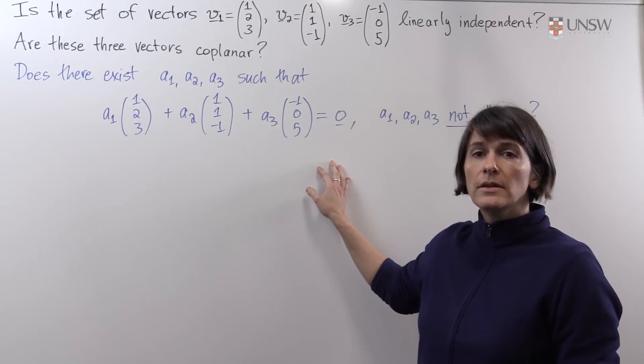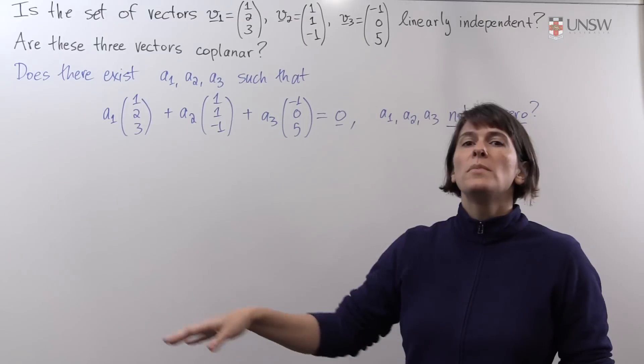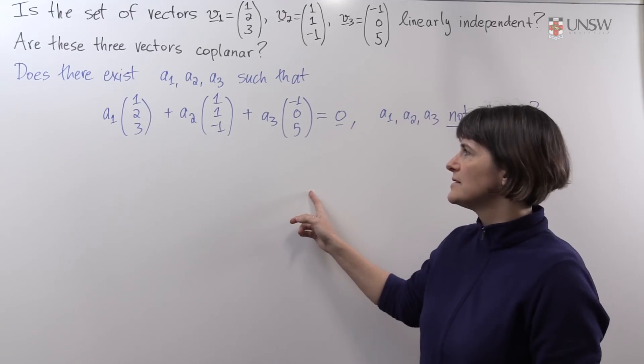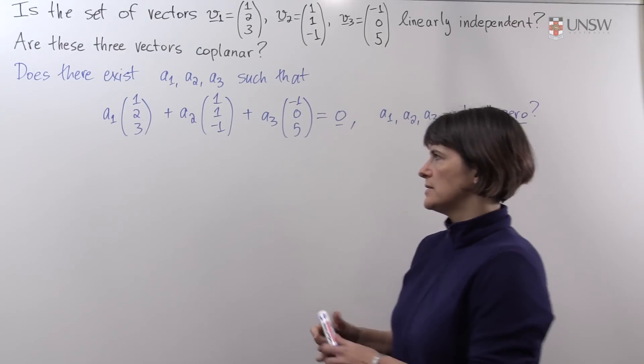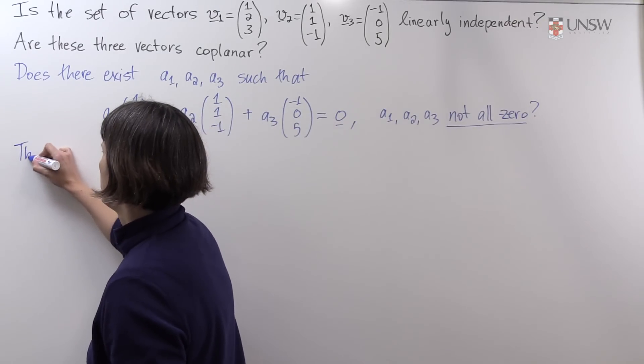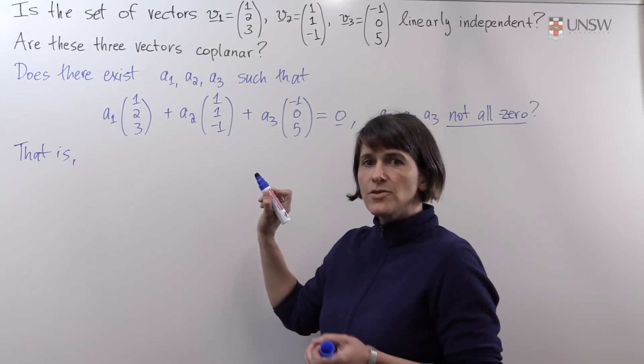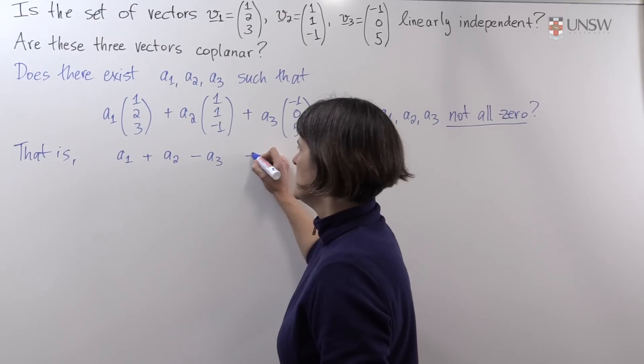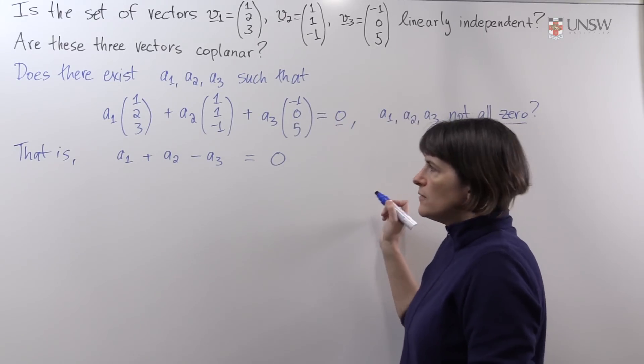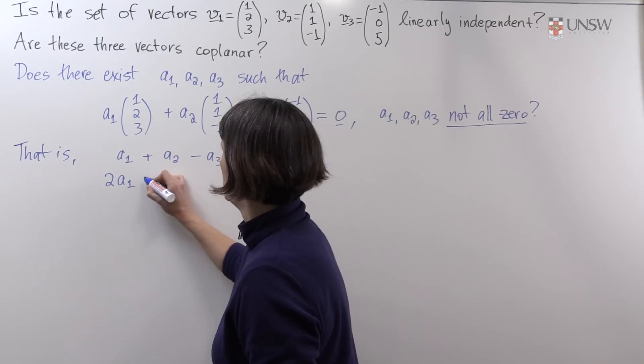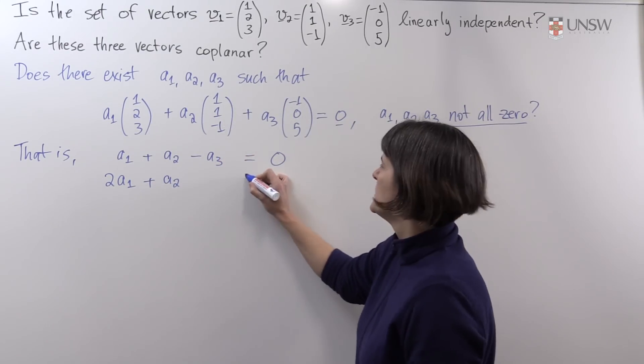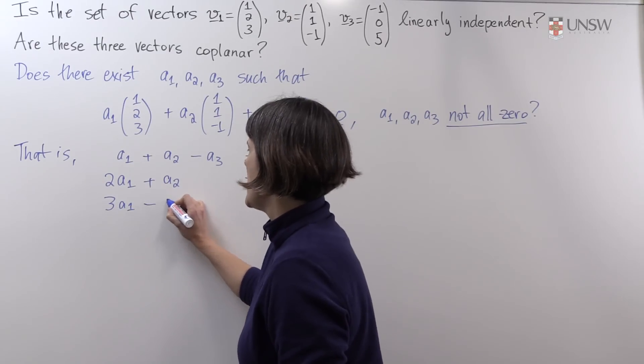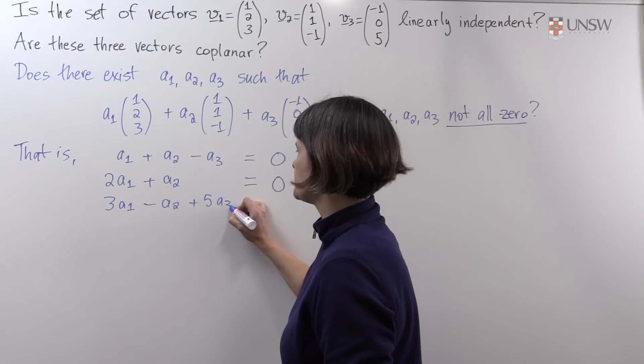If there is a non-trivial solution, then the vectors are not linearly independent, but it will mean they lie on a particular plane, the plane defined by the left-hand side. So we want to see whether we can find such constants. We'll turn it into a system of three linear equations. Firstly, looking at the first entry in each of these vectors, we would need a1 plus a2 minus a3 to equal 0. This is the vector 0, 0, 0. From the second entry, we would need 2a1 plus a2 plus no a3 to equal 0. And the third equation will be 3a1 minus a2 plus 5a3 equals 0.